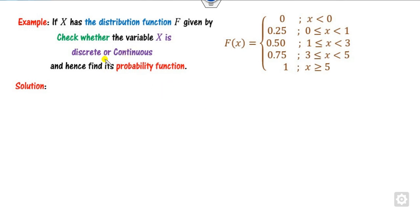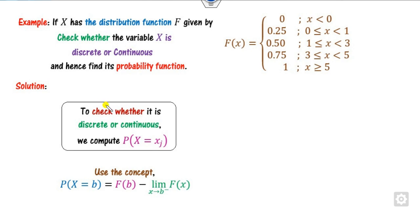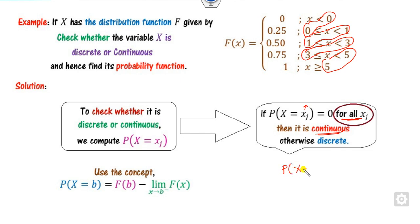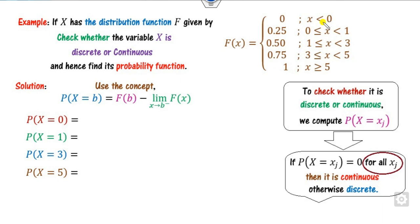Now consider whether a CDF represents a discrete or continuous random variable. The function values here are constant pieces. To check, we compute probabilities at the single points of discontinuity using P(X = x_j) = F(x_j) − F(x_j⁻). If all these values are 0, it is continuous; if any is non-zero, it is discrete. The discontinuities are at x = 0, 1, 2, and c. Substituting at x = 0: F(0) = 0.25 and F(0⁻) = 0.